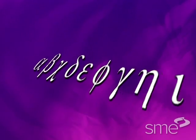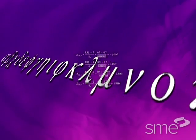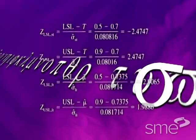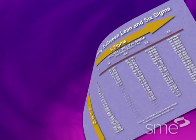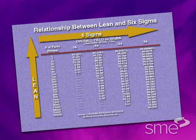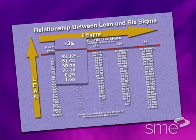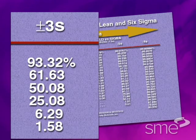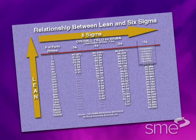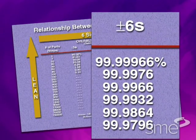The term Sigma comes from the Greek alphabet and is used in formulas to indicate variability. Sigma quality levels indicate how often defects are likely to occur. Higher Sigma quality levels indicate processes that are less likely to create defects. For instance, a Three Sigma quality level is approximately 10,700 defects per million opportunities, while a Six Sigma quality level is less than 3.4 defects per million.